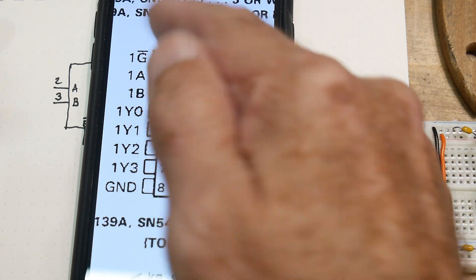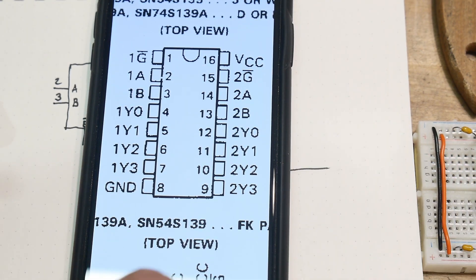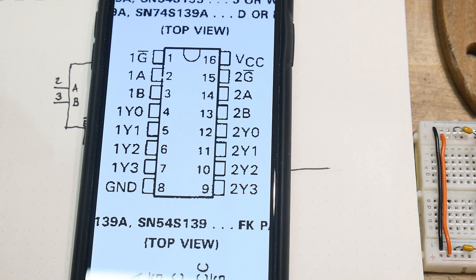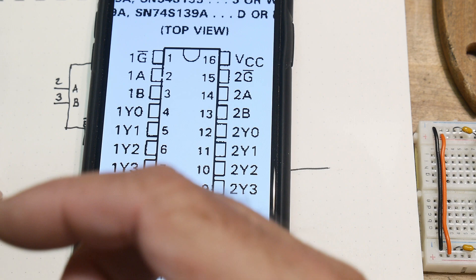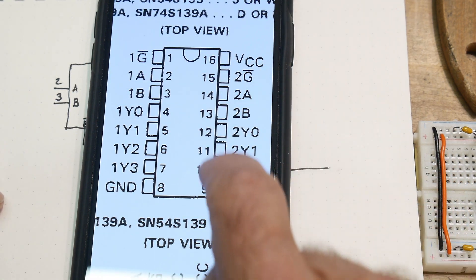The enable is also, they're calling G. You have the A and B inputs. And then there's two different, it's a dual package, right? So there's one device that are all labeled ones, and one device that's all labeled twos.